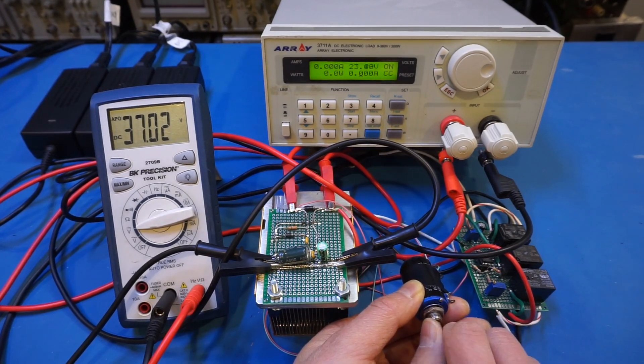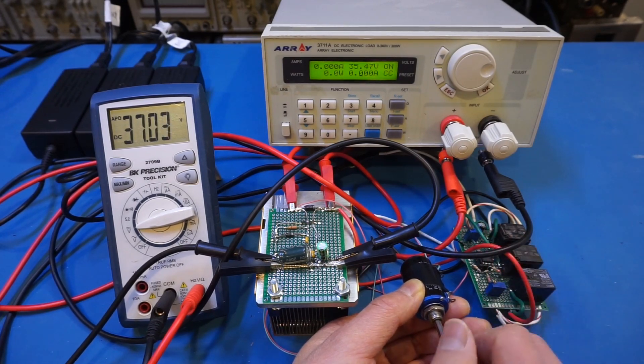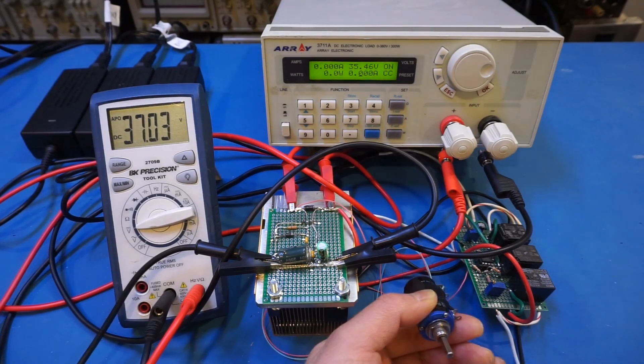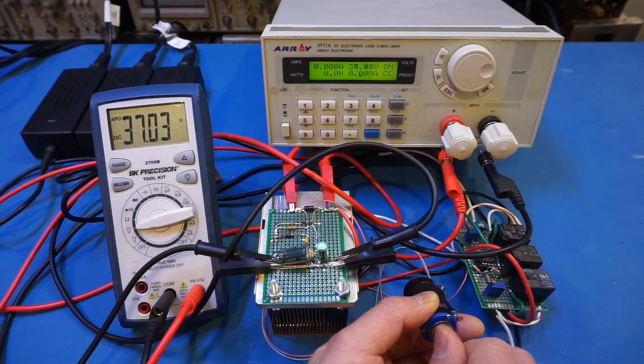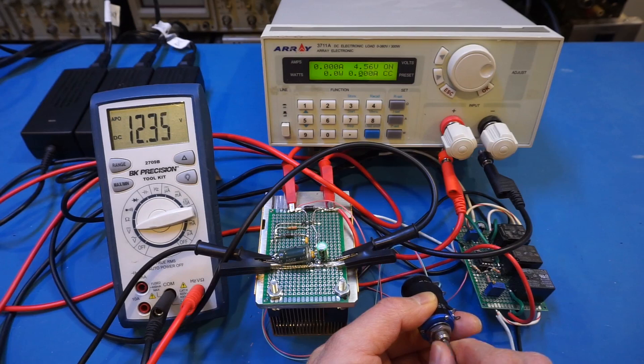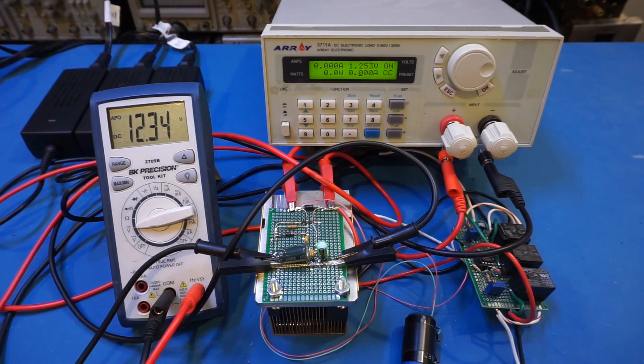So everything worked exactly as planned. Now if we keep increasing it we should be able to hit our maximum around 35 volts. So far so good. And let's quickly ramp it down and you should see the input started dropping to 24, 12, and yep. So everything works exactly as planned.